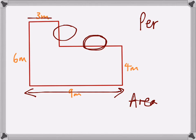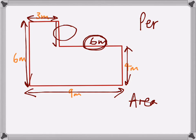To work out this missing dimension, the whole measurement along the bottom is nine, and this part of it is three, so the missing part must be six metres. Doing the same going up and down the sides, we have a six metre line here and this smaller one is only four. They're both vertical, so this element here would be the difference between the two, which is two metres.